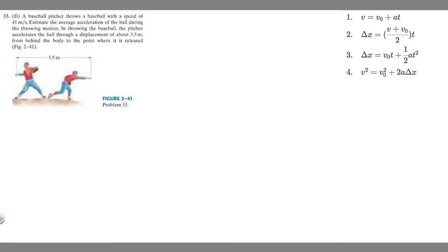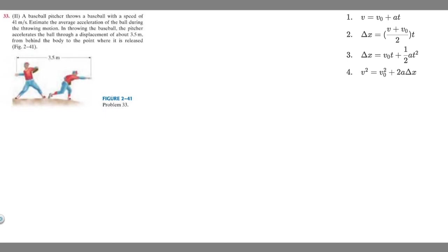In this problem, we're told a baseball pitcher throws a baseball with a speed of 41 meters per second. We need to estimate the average acceleration of the ball during the throwing motion. The pitcher accelerates the ball through a displacement of 3.5 meters from behind the body to the point where it is released. Luckily, we're given a diagram which is going to help us solve.